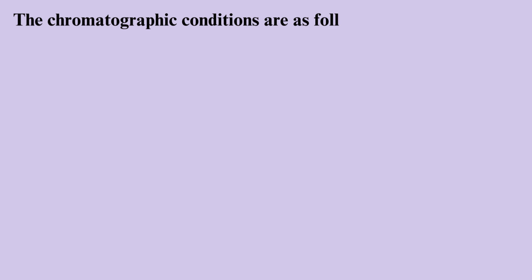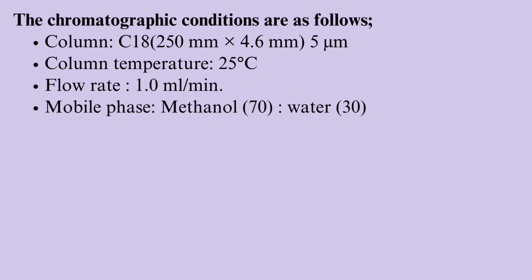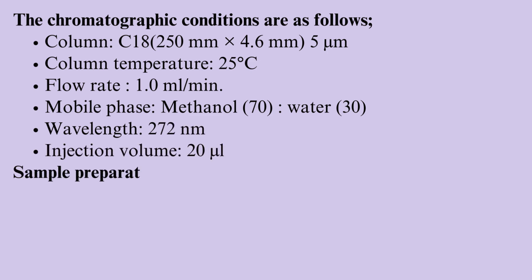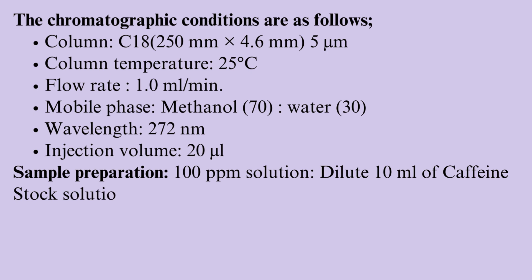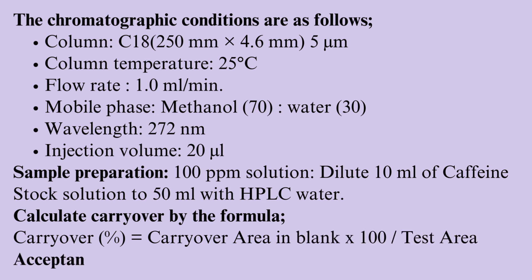Carryover test — chromatographic conditions: column C18, 250 mm × 4.6 mm, 5 µm; column temperature 25°C; flow rate 1 ml/min; mobile phase methanol/water; wavelength 272 nm; injection volume 20 µL. Sample preparation — 100 ppm solution: dilute 10 ml of caffeine stock solution to 50 ml with HPLC water. Calculate carryover by the formula: carryover% = (carryover area in blank × 100) / test area. Acceptance criteria: not more than 0.01%.